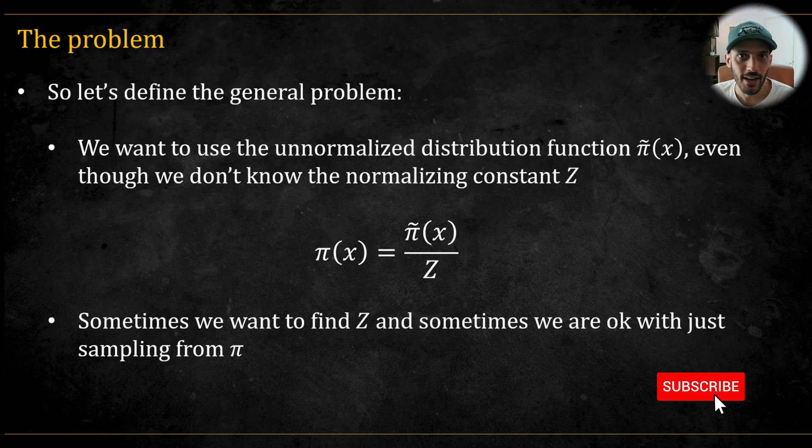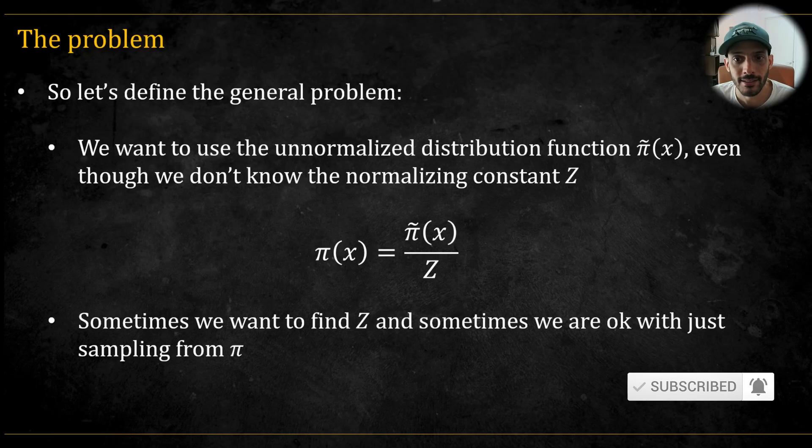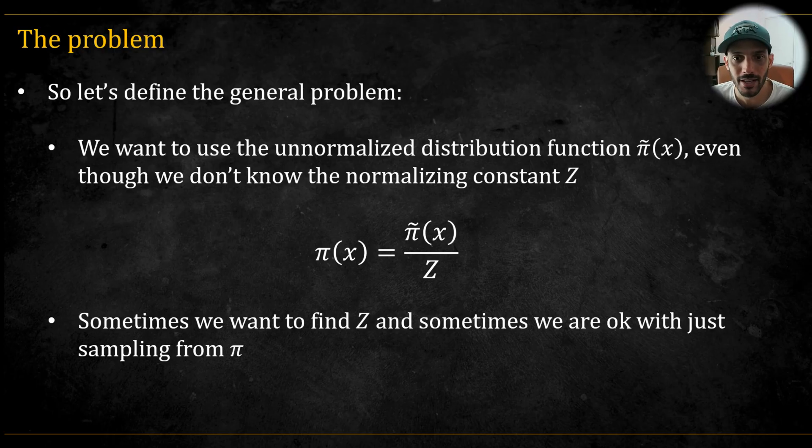So let's define the problem. We have an unnormalized distribution that we denote by π tilde of x. It can be instead of x, theta, your parameters, it really depends on the context. We don't know the normalizing constant of this unnormalized distribution, which we denote by Z. Sometimes we want to find Z, but sometimes, as is mainly the case with MCMC, we are fine with just obtaining a sample from π.